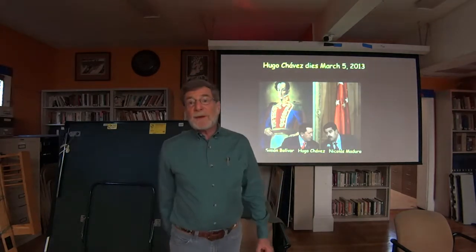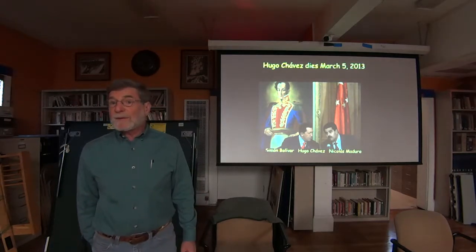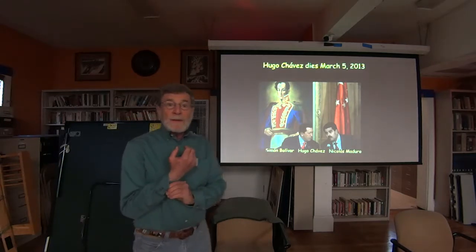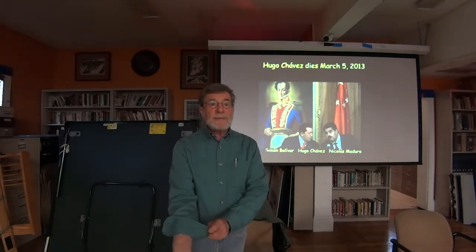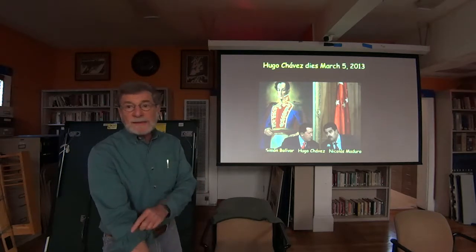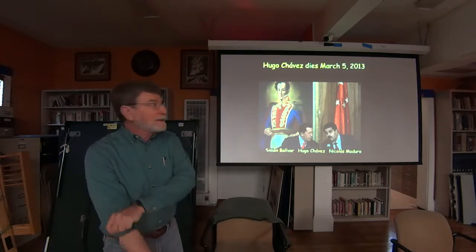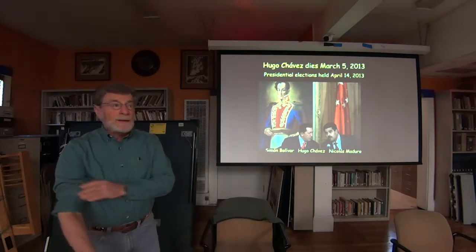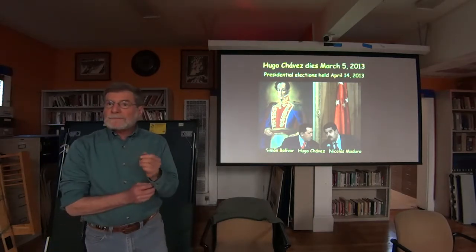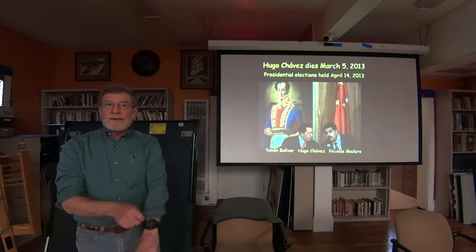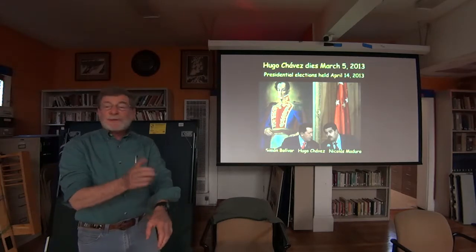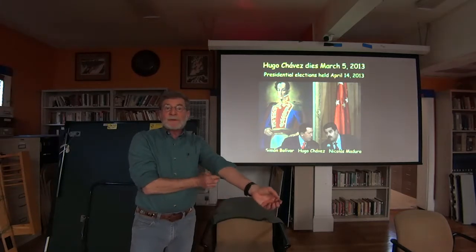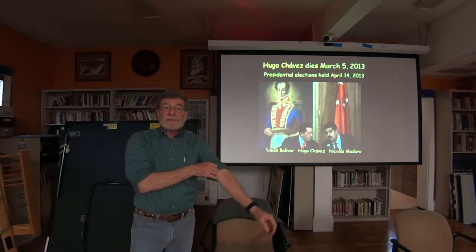Hugo Chavez passed away from cancer on March 5th, 2013. He had anticipated his passing and designated his vice president, Nicolas Maduro, as his successor. Maduro ran for the presidency and won in elections on April 14th — I was an election observer then. According to the Venezuelan constitution, when the president passes away, you have to have snap elections within 30 days. It was a very traumatic time for the Venezuelan people, and conversely, for the US government it was seen as a great opportunity.